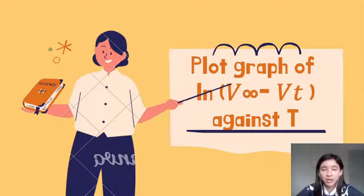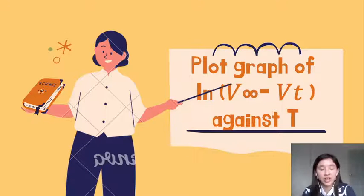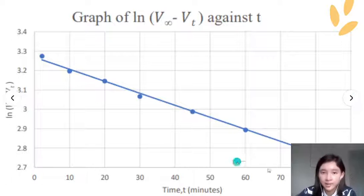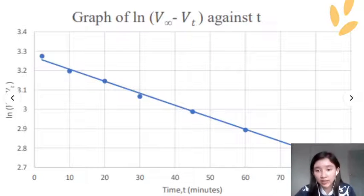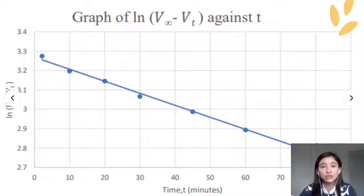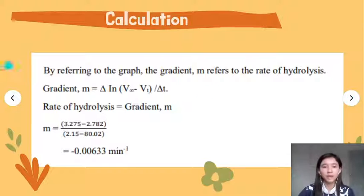It's very simple. We just take all the x-axis values and y-axis values in Excel, then it will come out with a graph like this. We will get a linear graph, which we can directly link to the mathematical equation y = mx + c. The m, the gradient, is the rate constant.